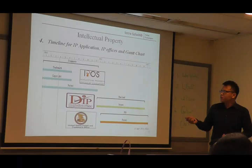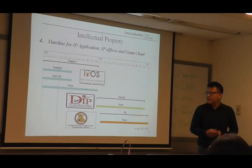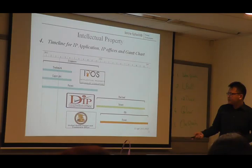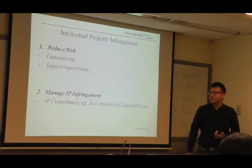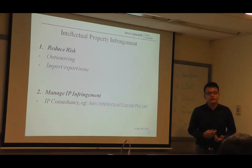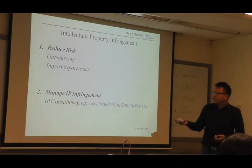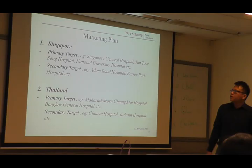This is the timeline for the IP application. In 2015 we applied trademark, copyright, and patent in Singapore. In 2016 we're going to apply patent in Thailand and the US. The relevant offices are the IP Office of Singapore, the Department of IP in Thailand, and the US Patent and Trademark Office. To reduce risk in IP engagement, we decided to do outsourcing — there is less risk in IP arrangement as we are not producing ourselves, and by outsourcing we have fewer concerns about infringing others. When we encounter IP-related issues, we can consult professional IP consultancy.